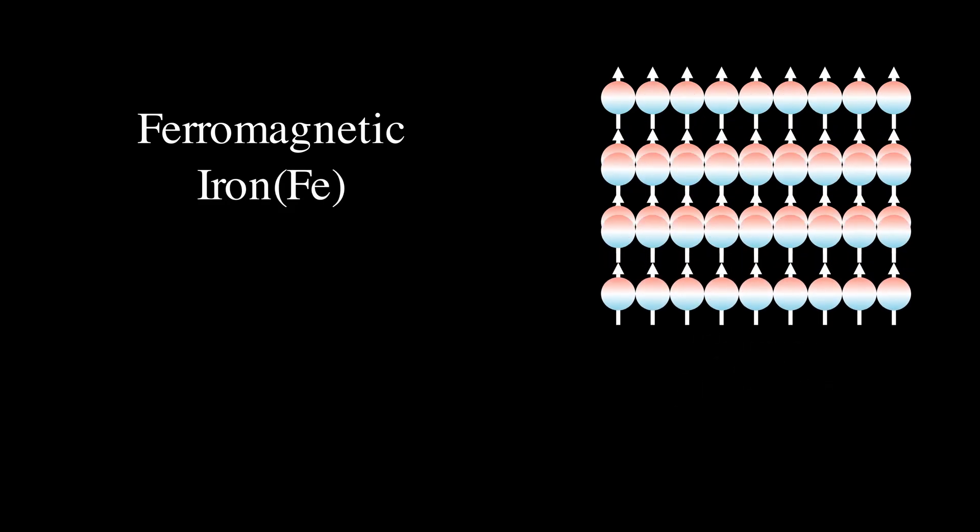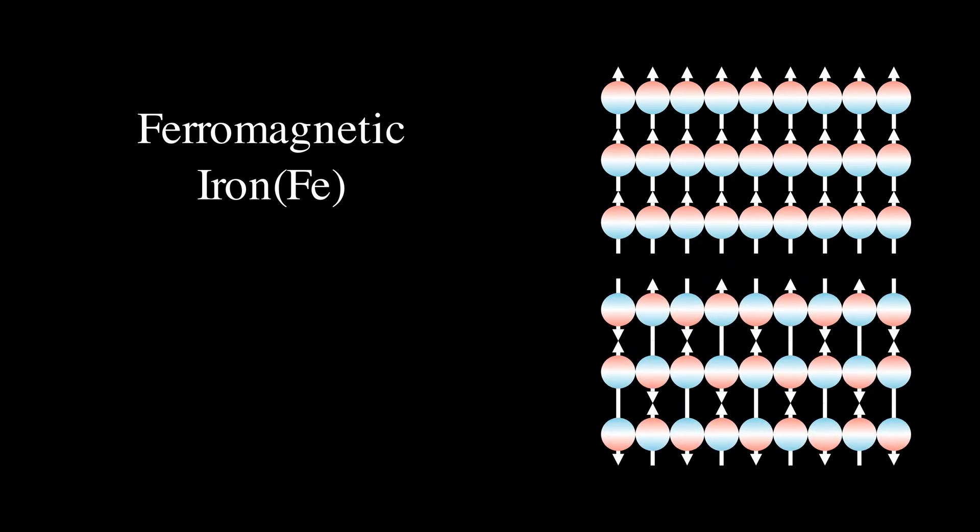But it's not that simple. Some materials, even with magnetic atoms, are not magnetic as a whole because their atoms prefer to align in alternating directions that cancel each other out. These are called anti-ferromagnetic. Chromium is an example of an element that is a magnetic atom but forms an anti-ferromagnetic crystal and so is not magnetic.